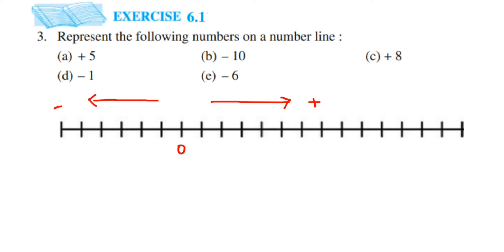You can plot zero anywhere. The right next number after zero is one, so you start writing the natural numbers: zero, one, two, three.